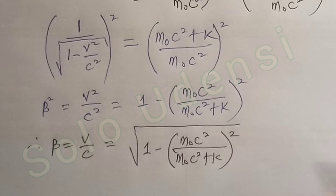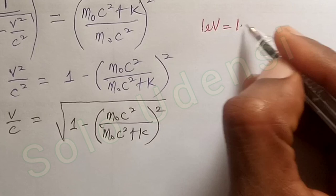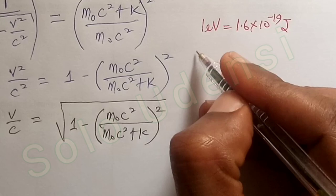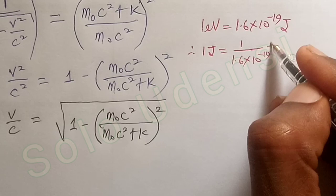Now, 1 electron volt is equal to 1.6 times 10 raised to the power minus 19 joules. Therefore, 1 joule is equal to 1 over 1.6 times 10 to the power 19 electron volts.